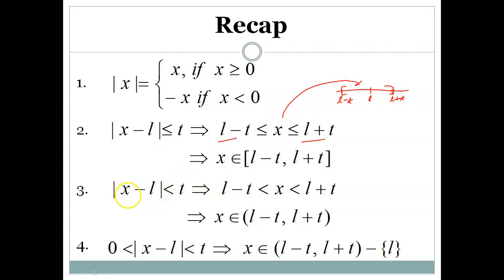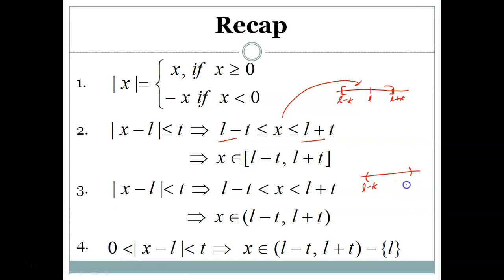Similarly, when |x - l| is strictly less than t, we can say x strictly lies between l minus t and l plus t. In that case it is the open interval (l-t, l+t), meaning the endpoints are not included — x belongs to the open interval (l-t, l+t).